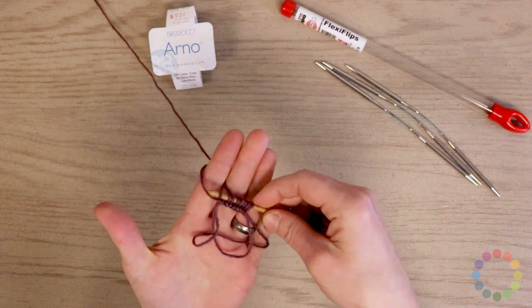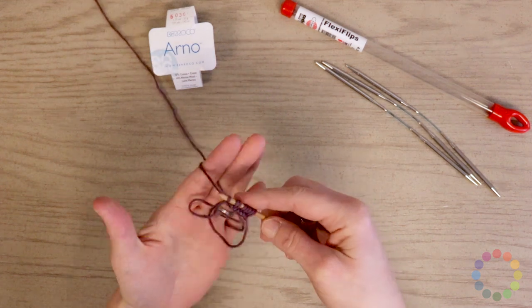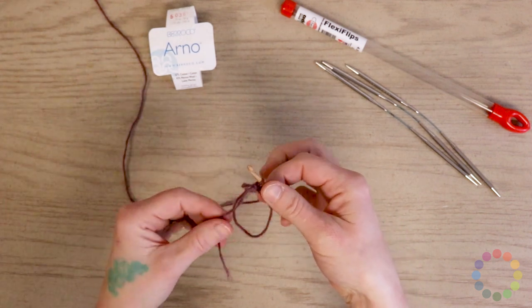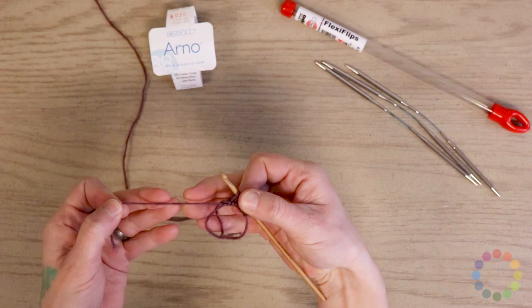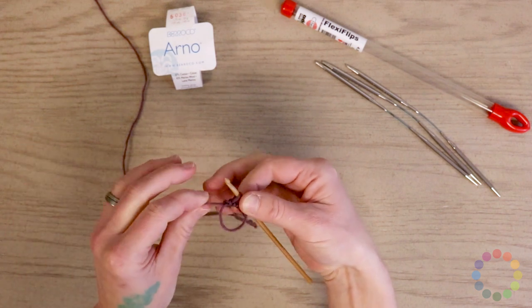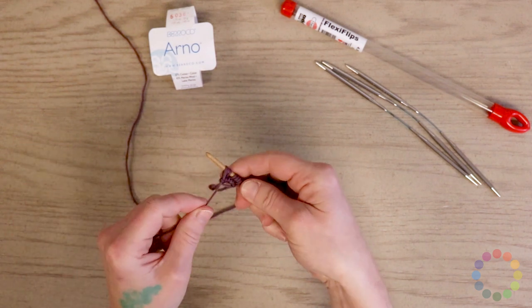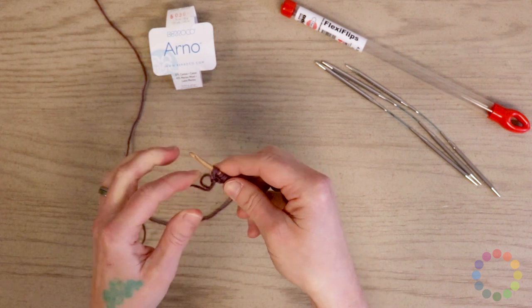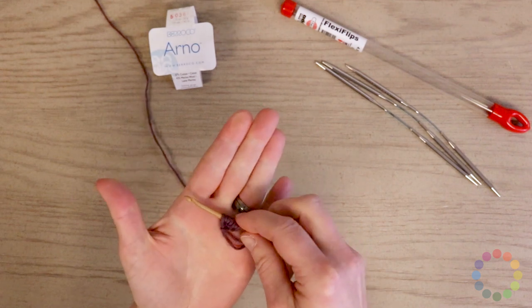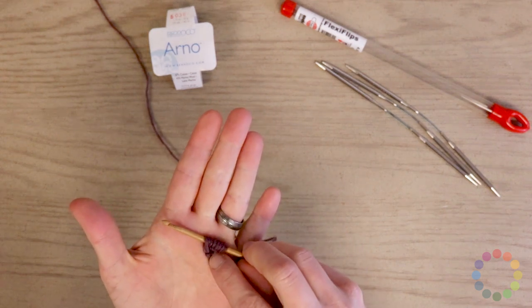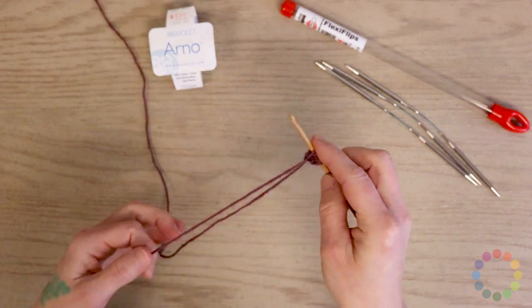So you can see that I've got eight live loops on my hook here. Now I'm going to take this tail here and I'm going to pull it. You can see why it's called a magic ring in crochet because it kind of magically just tightens up there. And also why it's going to be called the pinhole beginning in knitting because you can see that's just as big as a pinhole. It's almost entirely closed, which is nice.